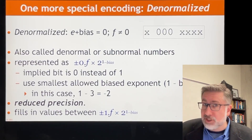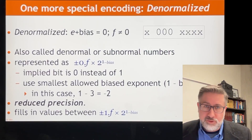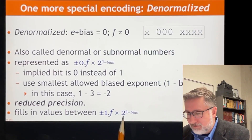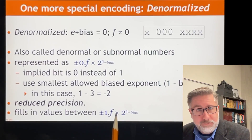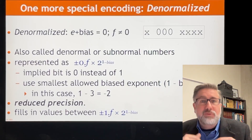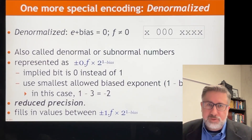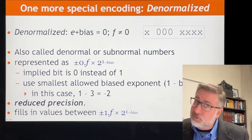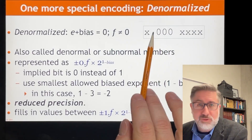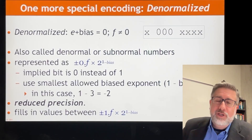Now we reduce a bit of precision because we lose a bit or two or three — we can have 0.000 something times two to the negative two. But we're filling in the gap between plus or minus one point something times two to the negative two. The reason we don't use negative three as the bias is because that number is reserved. All zeros in the exponent means we're doing something special — either zero or these denormalized numbers. So we have to encode a separate kind of math.